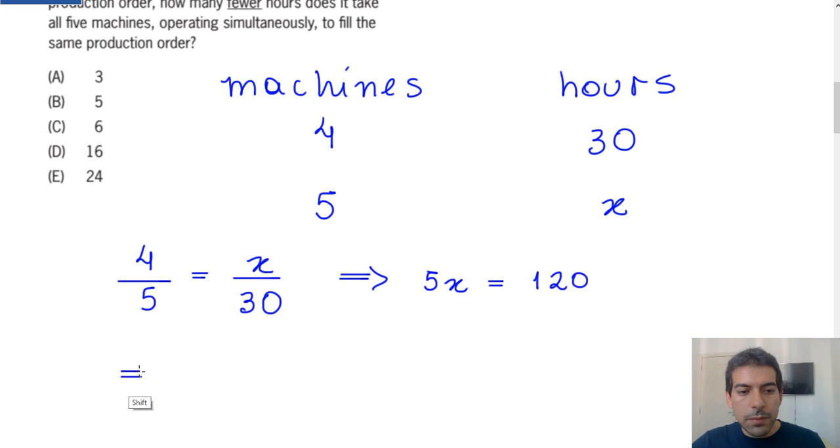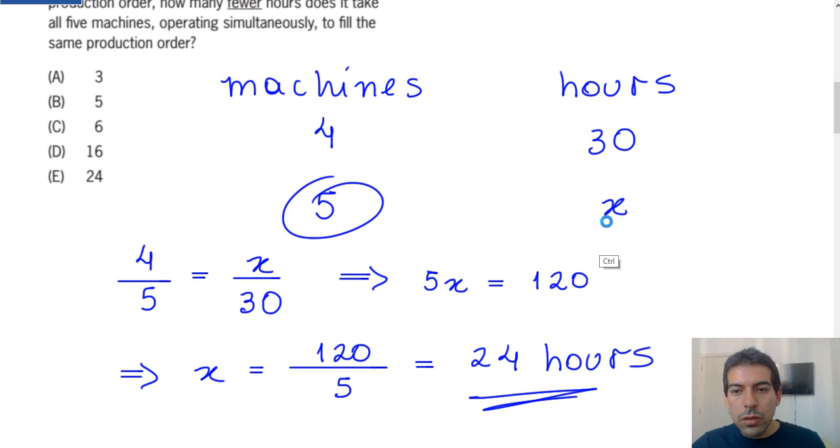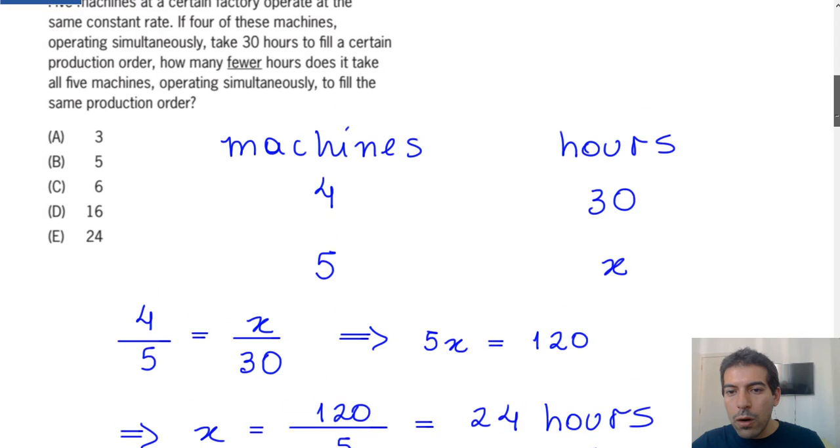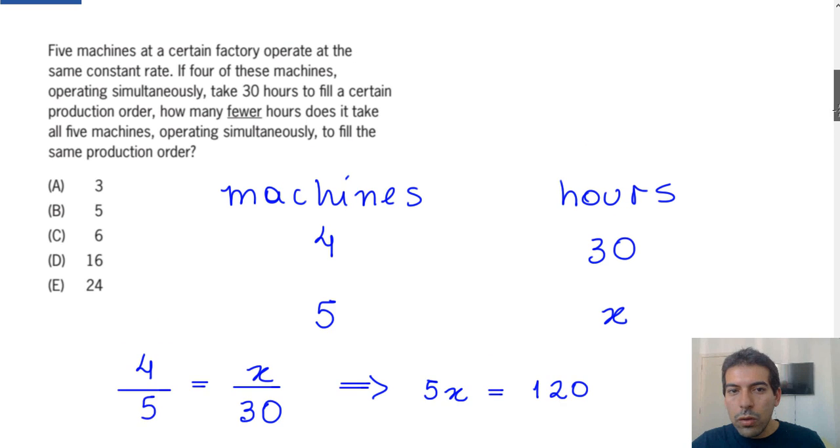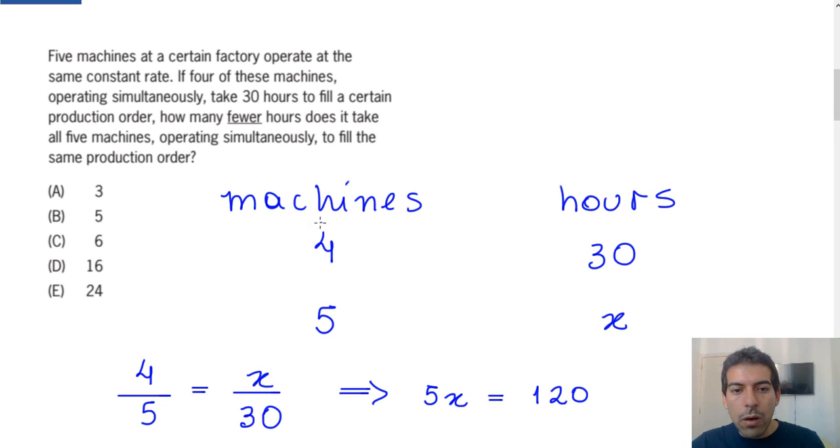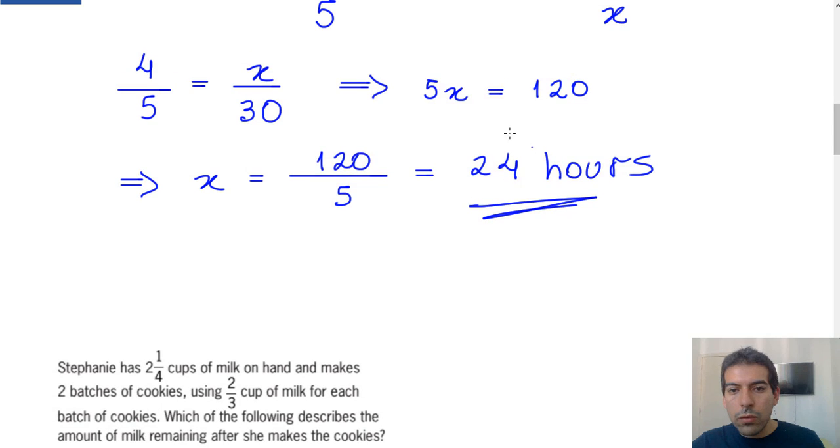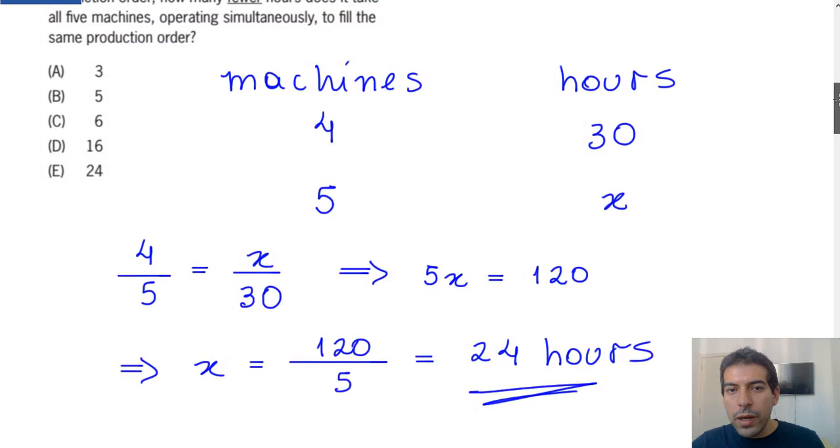This implies that X must equal 120 divided by 5. 120 divided by 5 is 24 hours. So five machines do the same job in 24 hours. We know that four machines do the job in 30 hours, and five machines do the job in 24 hours.